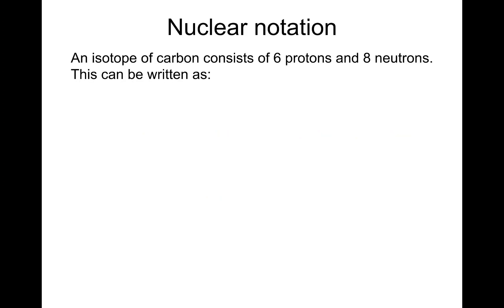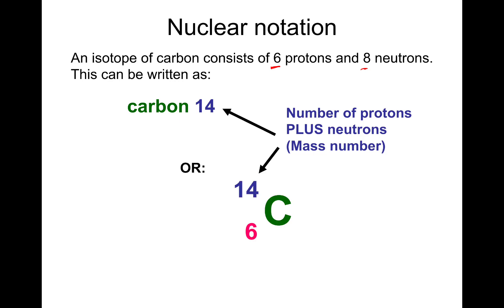We've got an isotope of carbon. We'll come on to what isotopes are in a moment. But an isotope of carbon, just an atom, consists of 6 protons and 8 neutrons. And it can be written in a couple of ways. So the first way is like this: carbon-14. And the 14 is just the mass number, the total number of protons and neutrons.